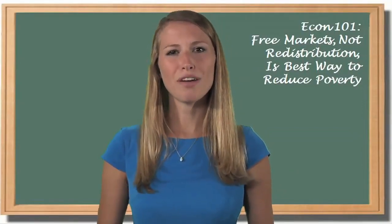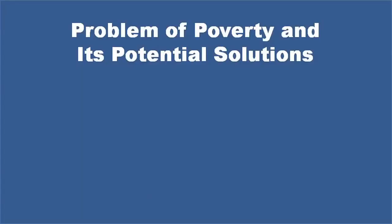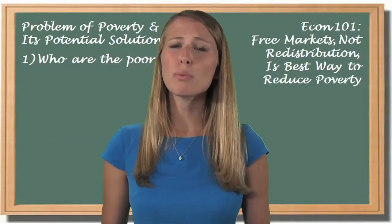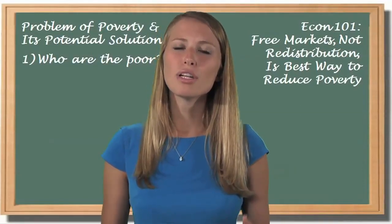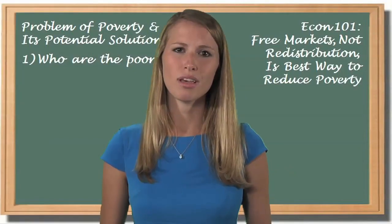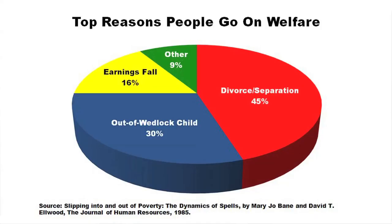Let's examine the problem of poverty and its potential solutions with four questions. First of all, who are the poor? In too many cases, people are born into poverty and become part of a multi-generational pattern of dependency. Other Americans enter poverty later in life. The top reasons that someone goes on to welfare in the United States are divorce, followed by having a child out of wedlock. Interestingly, reduced wages or the loss of a job are not that high on the list.